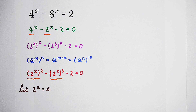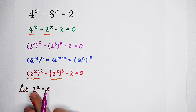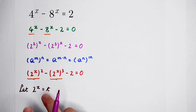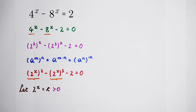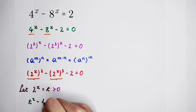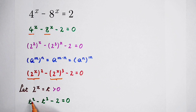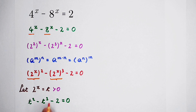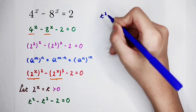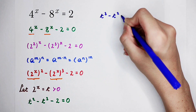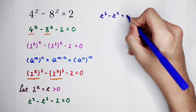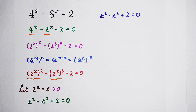Let 2 to the power of x equal t. Now you should pay attention: the range of 2 to the power of x is always positive, which means t is positive. This gives us the equation about t: t squared minus t cubed minus 2 equals 0. Since the cubic exponent is bigger, we multiply both sides by minus 1, giving us t cubed minus t squared plus 2 equals 0.